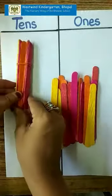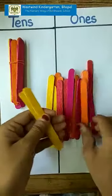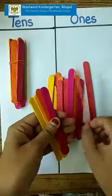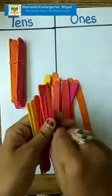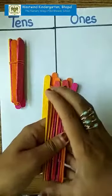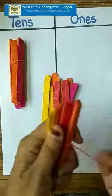I will keep it on tens place. Now, let's count the sticks again. 1, 2, 3, 4, 5, 6, 7, 8, 9 and 10. So my second bundle is also ready of 10 ice cream sticks.